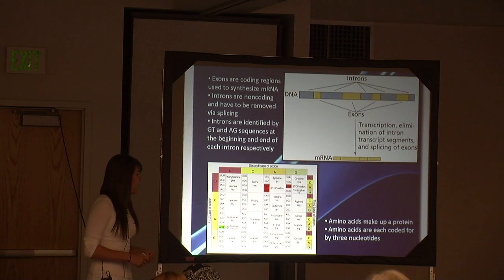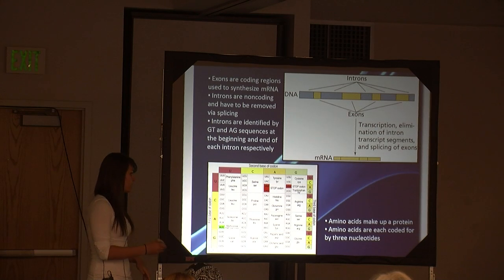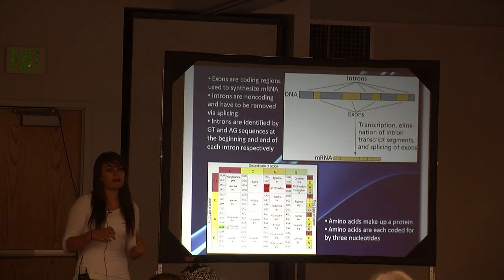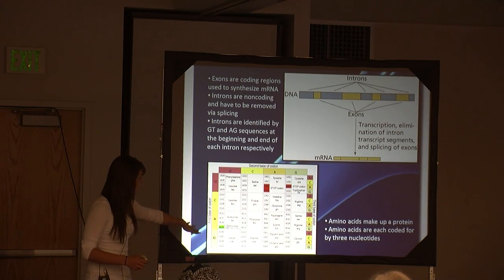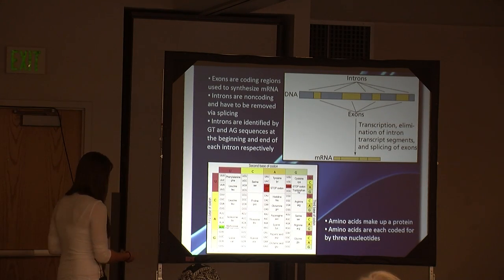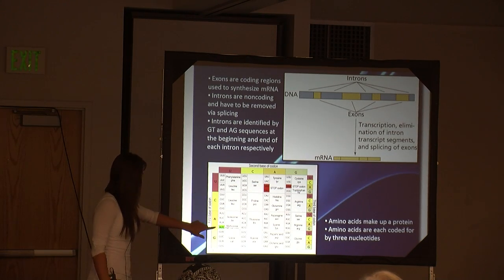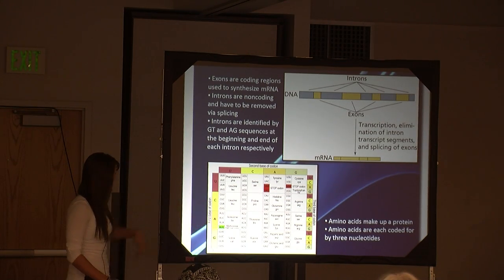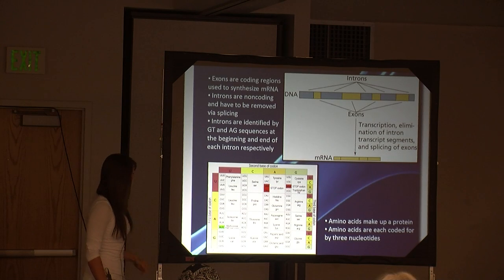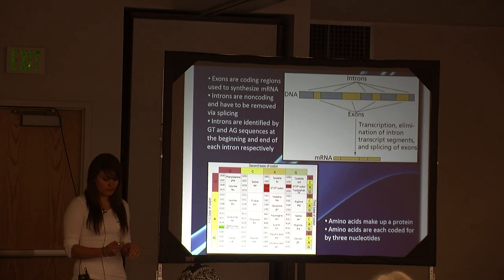Amino acids are what make up a protein, and each amino acid is coded for by three nucleotides. We see all the variations with the four nucleotides coding for specific amino acids. For example, leucine would have multiple types of codon — CUU or CUC would both code for leucine.